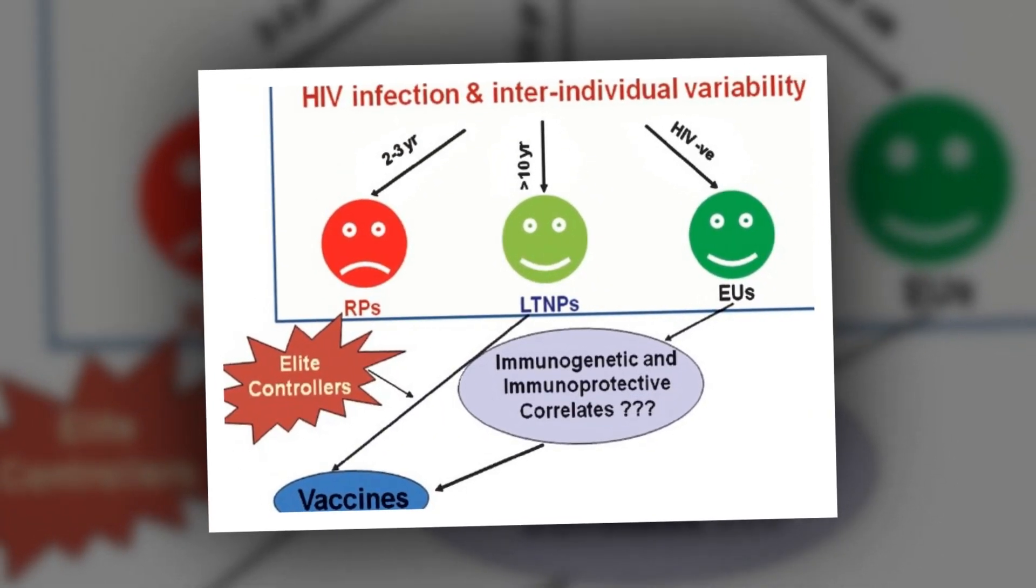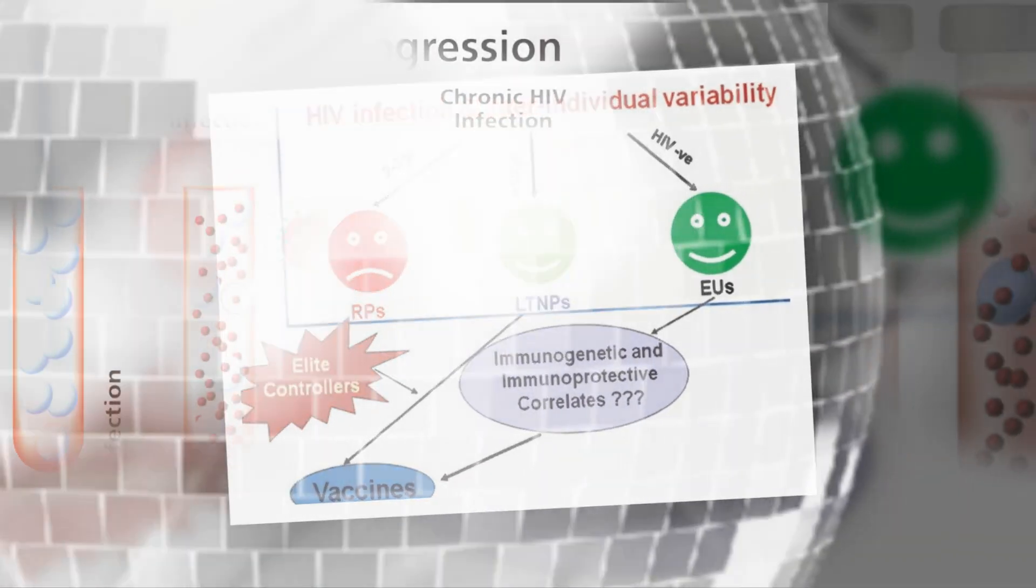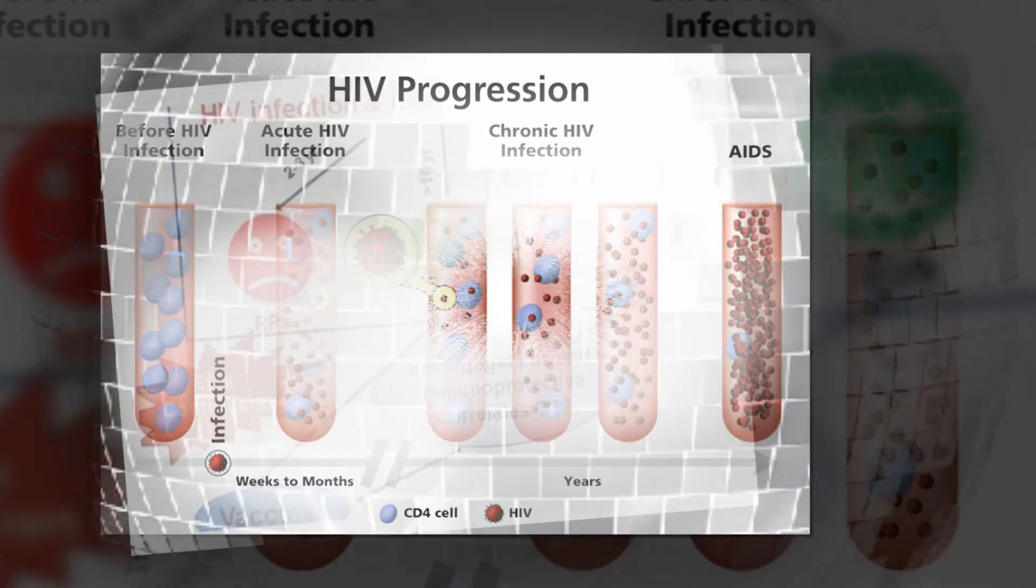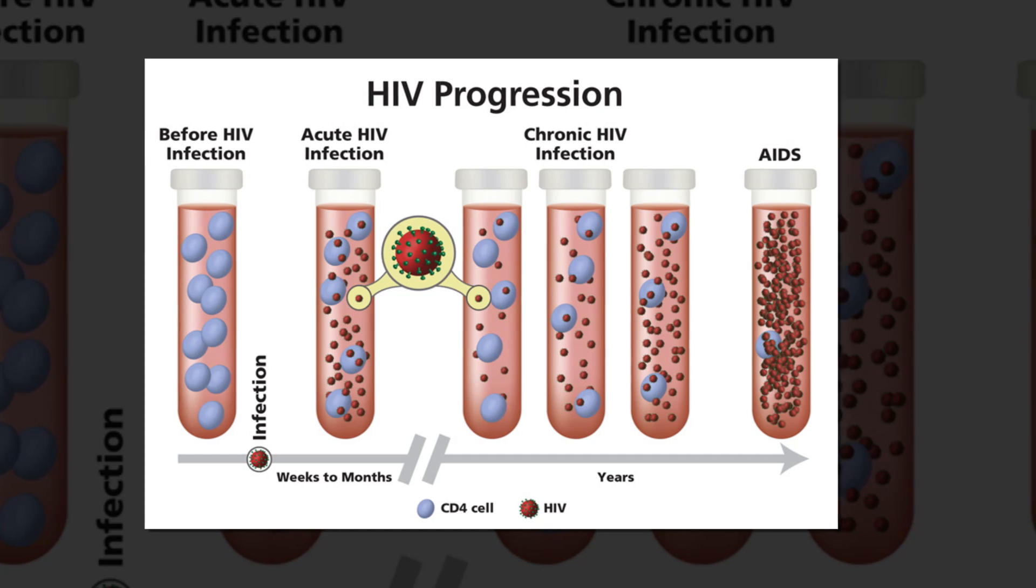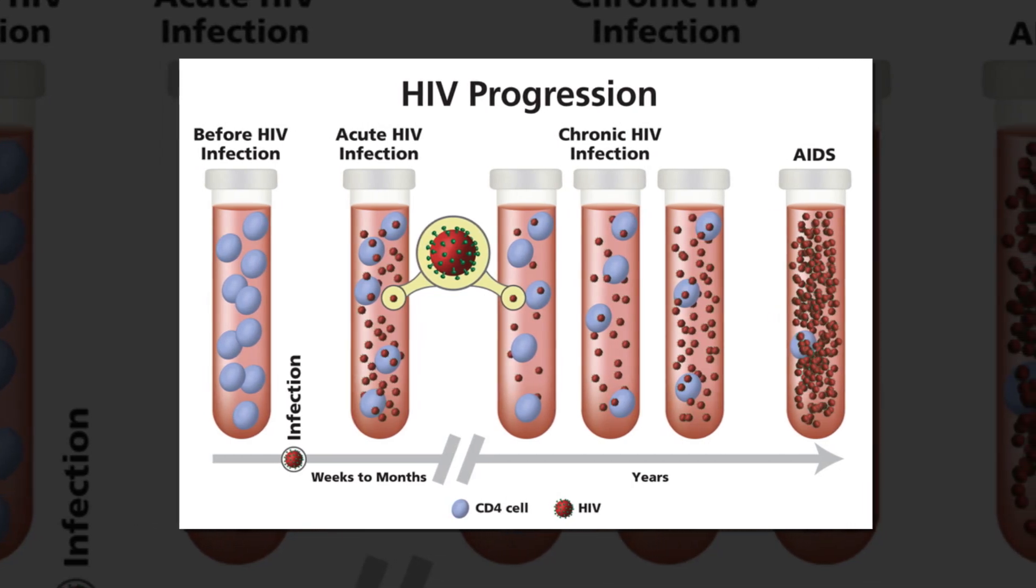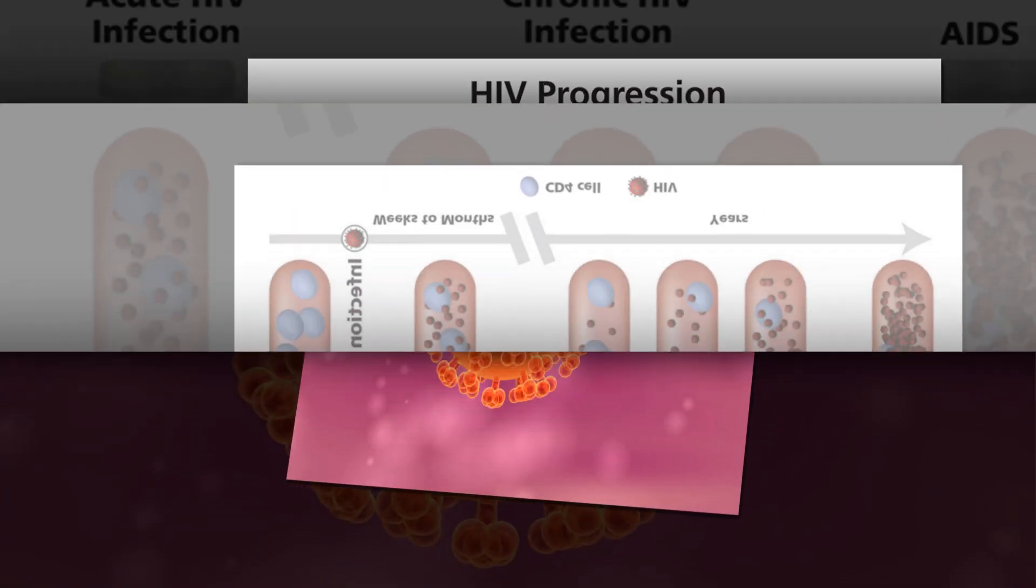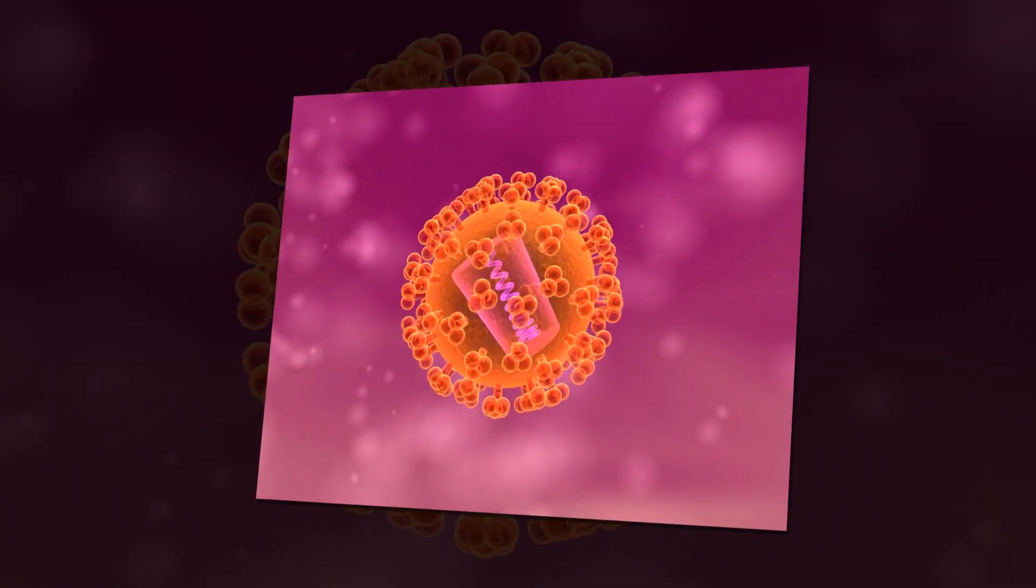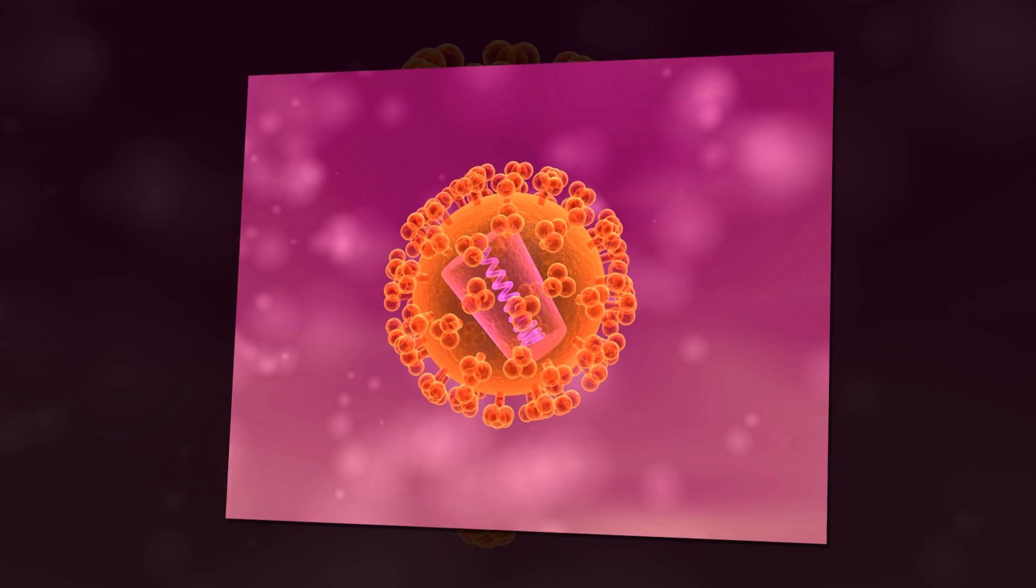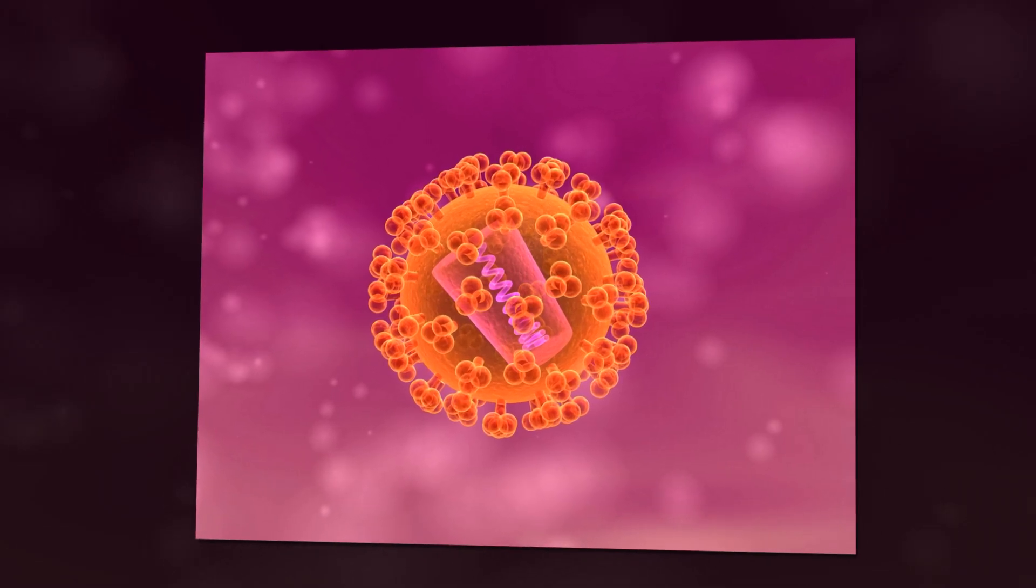In turn, the preservation of immune function allows VNPs to prevent the progression from HIV to AIDS without antiretroviral therapy. By figuring out the mechanisms of natural protection in this small group of individuals, future researchers now have a successful model from which to design interventions that could restore immune function to the greater HIV community.